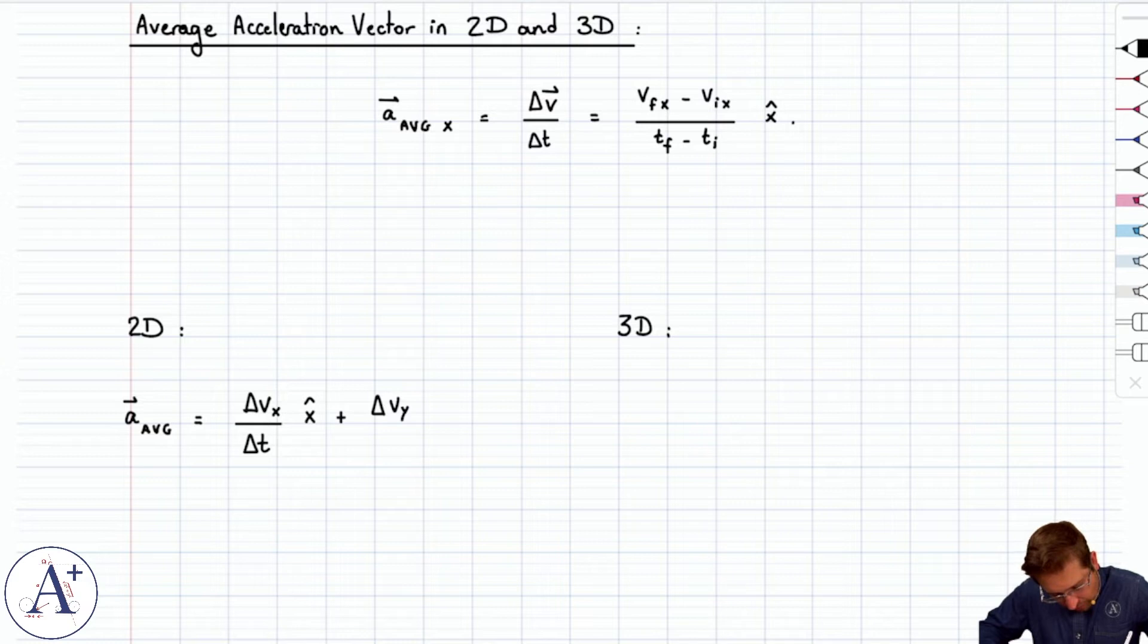And then delta v_y, so the y component of velocity, the change in the y component of velocity, divided by delta t, y hat.